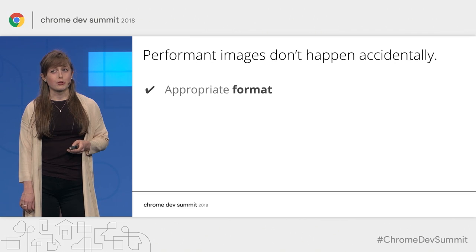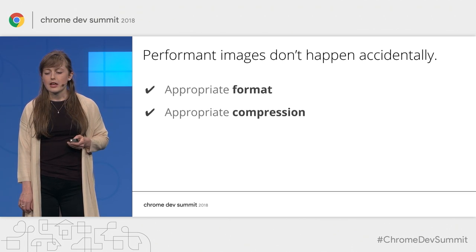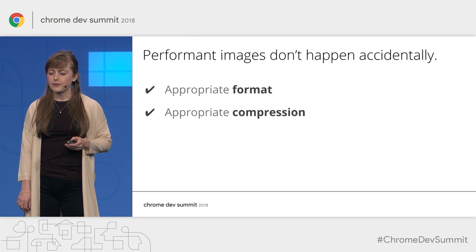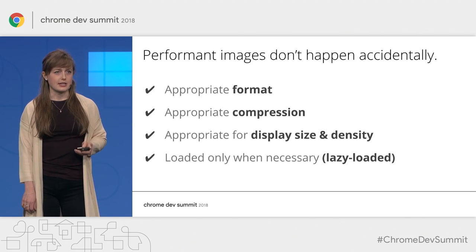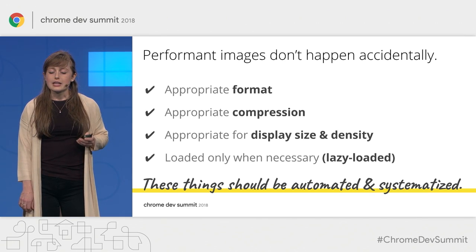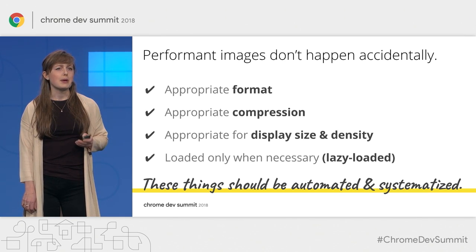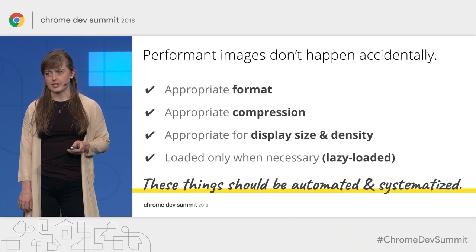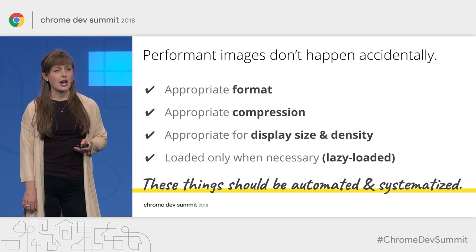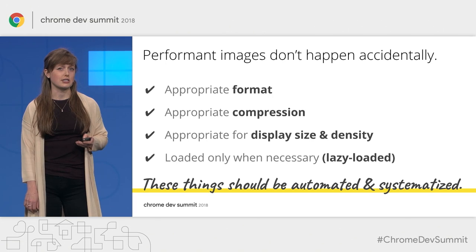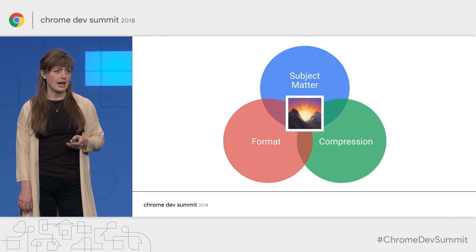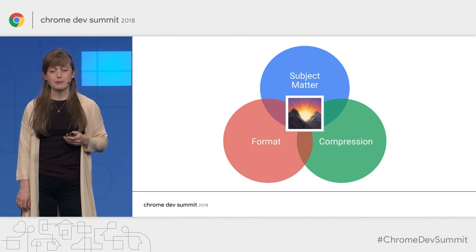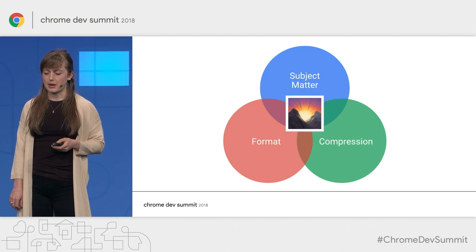A performant image is the appropriate format, it is appropriately compressed, it is appropriate for the display, and it is loaded only when necessary. To be successful with images, it's imperative that you automate and systematize these things — not only is this going to save you time, but it's going to ensure that these things actually get done. At a bits and bytes level, an image is as much a byproduct of its image format and compression as its visual subject matter.